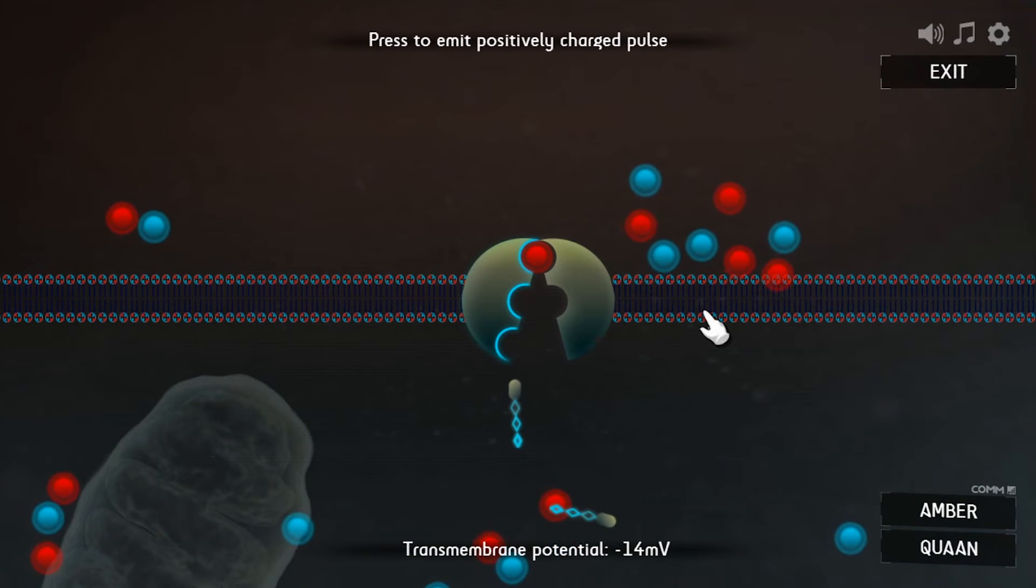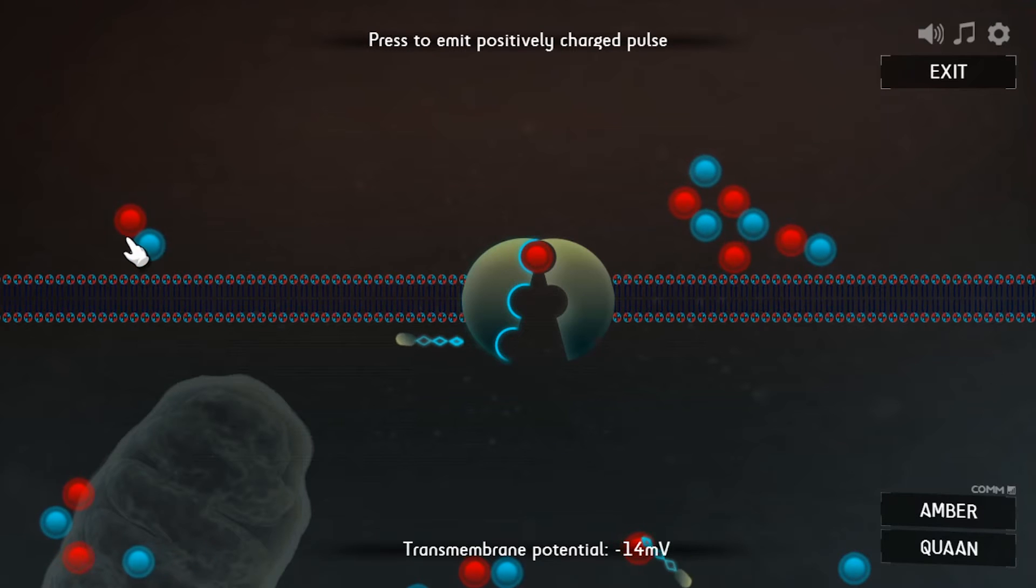That's the cell membrane. Everything above it is outside the nerve cell and below it is inside. The blue balls represent negative ions and the red ones are positive ions, sodium and potassium.